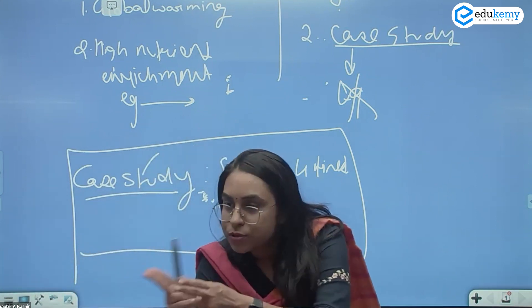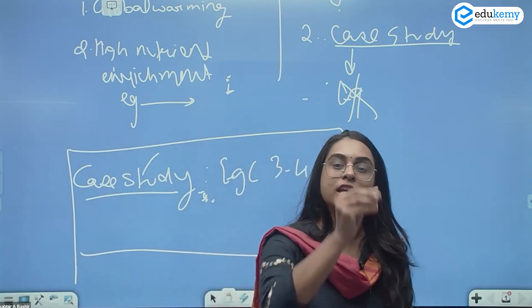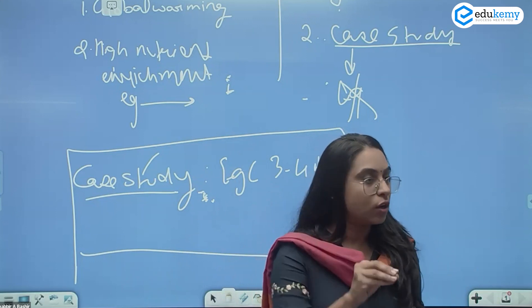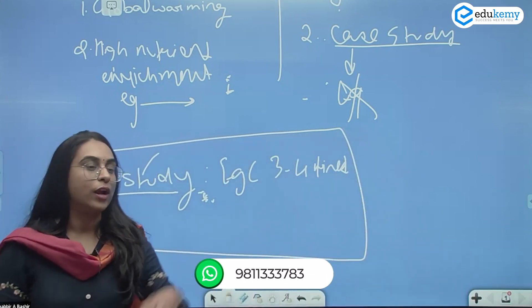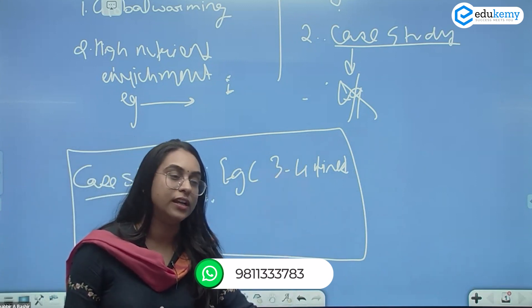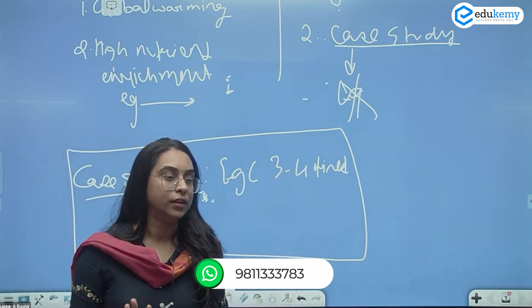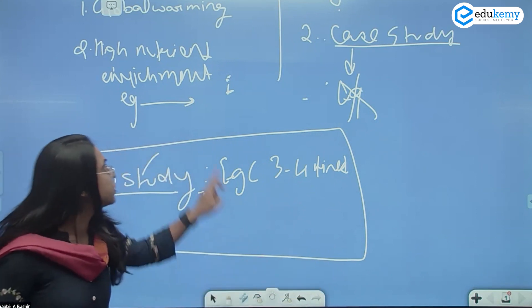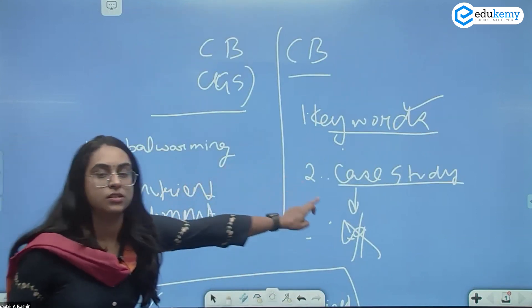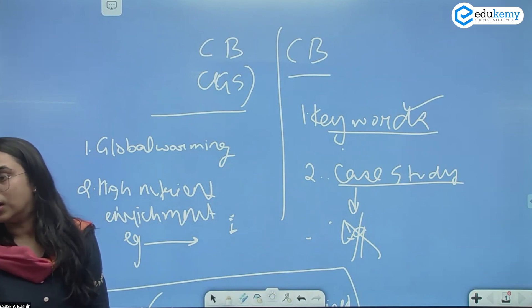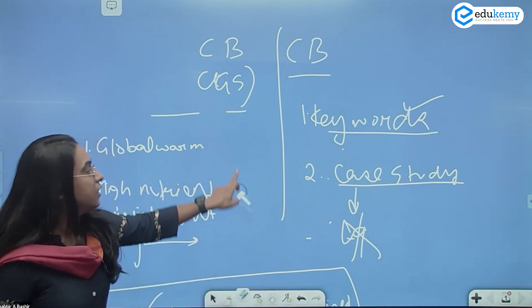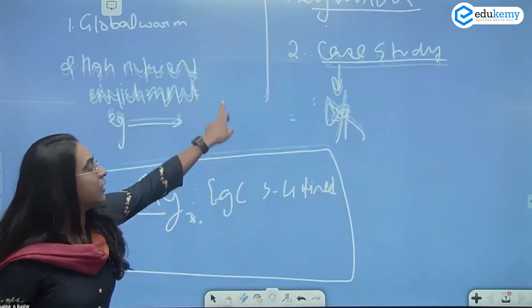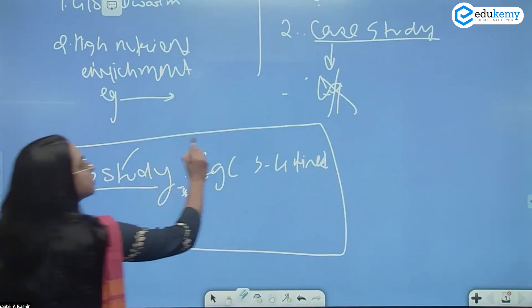That's what is your geographical optional answer versus a GS answer. But in geography, better than writing five, seven, six dimensions, even if you write four dimensions with substantiated details and good diagrams, that is more than enough. So this is what differentiates GS versus your geography optional answers. One is use of key terms, the other is your case studies, and third thing that is especially done for your geography optional answers.